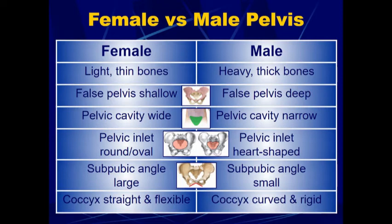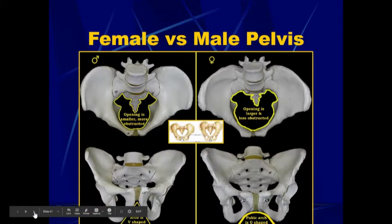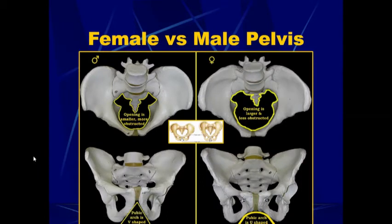In females, the coccyx is straight and flexible, which aids in movement during childbirth. In males, the coccyx is curved and more rigid with less movement, but there is no need for that movement. Here is just a comparison of the female versus male pelvis.